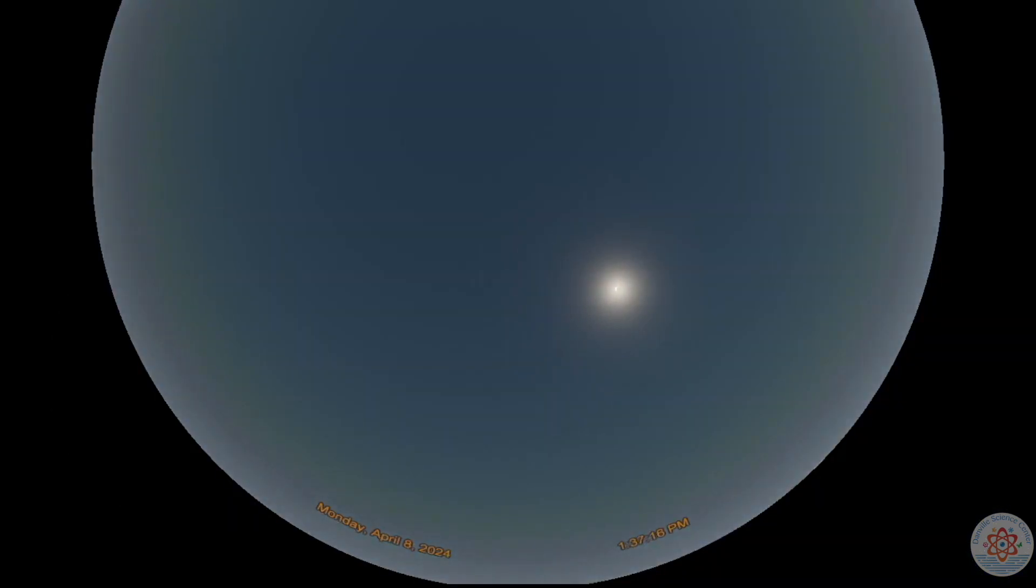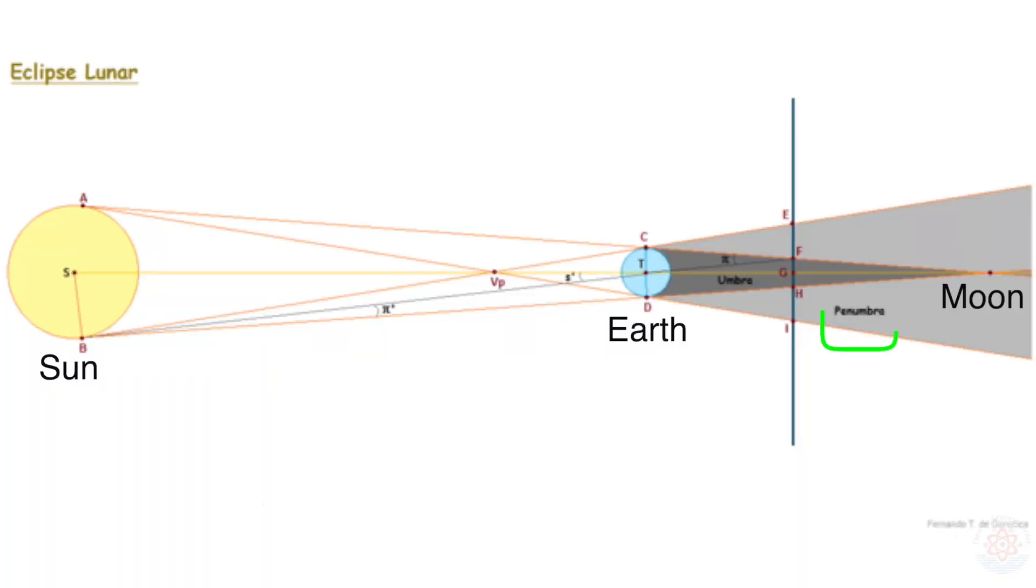Next month, the Sun will partially disappear from the sky when we experience a near-total solar eclipse here in Danville. On the 25th of this month, we get a little teaser with a penumbral lunar eclipse.